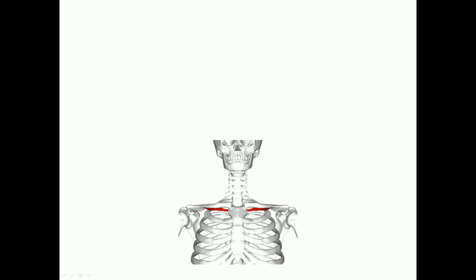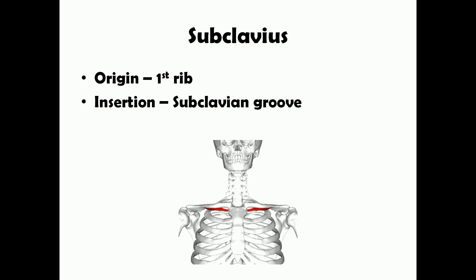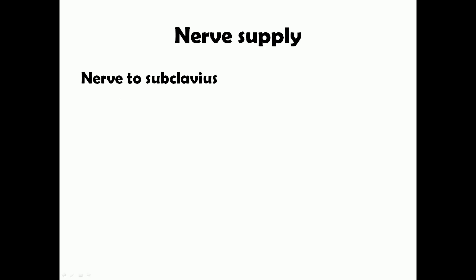The next muscle is the subclavius. The subclavius muscle originates from the first rib — you can see it originates medially from the first rib and gets inserted into the subclavian groove, which is present below the clavicle bone. As the name suggests, the subclavian groove is a groove below the clavicle. The nerve that supplies the subclavius muscle is called the nerve to subclavius, which is easy to remember.